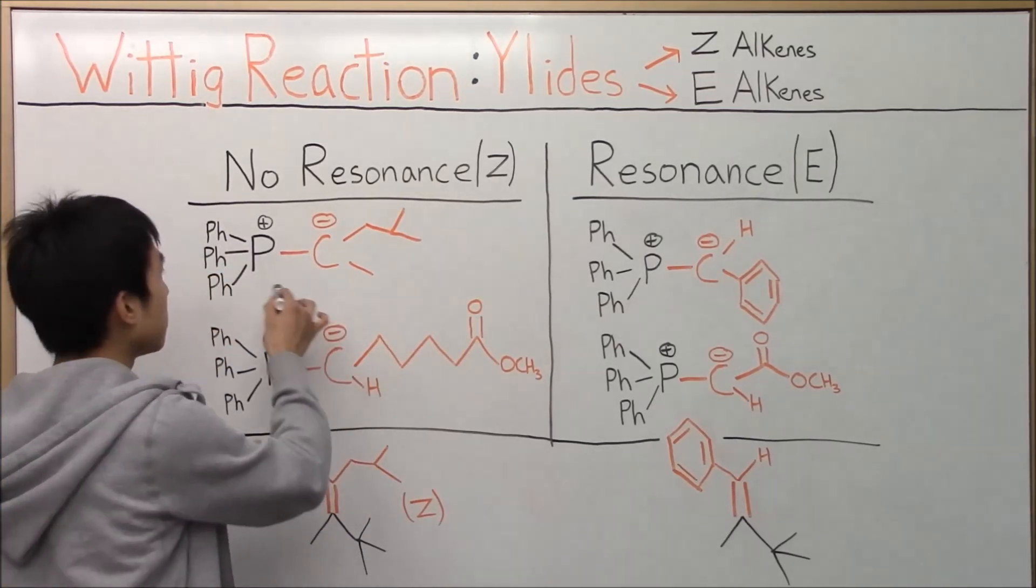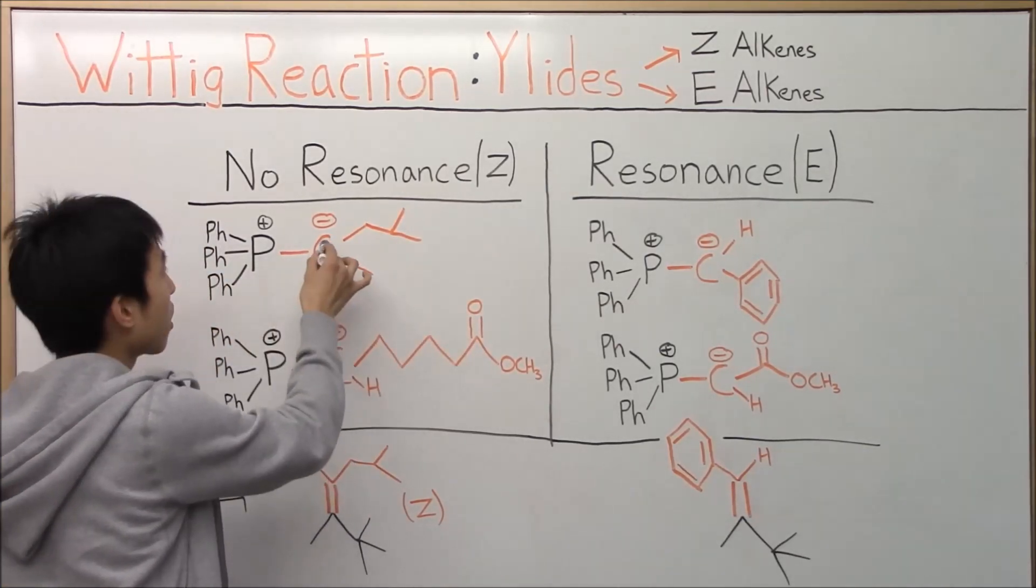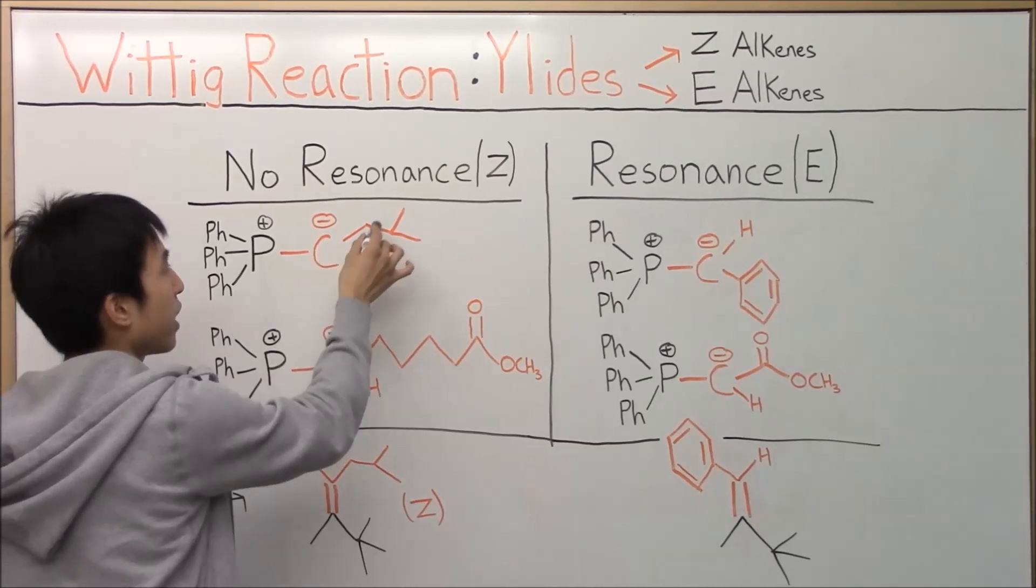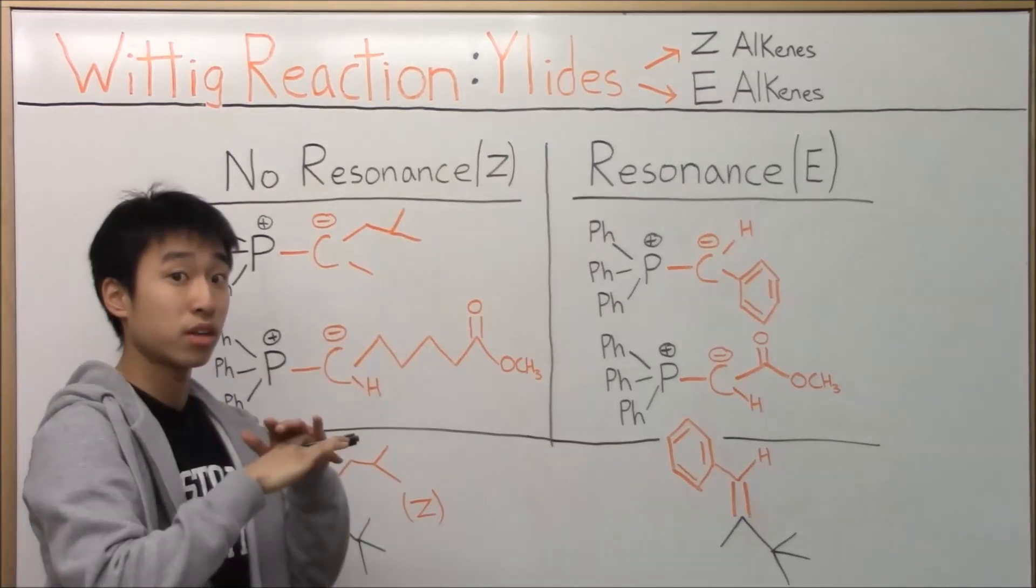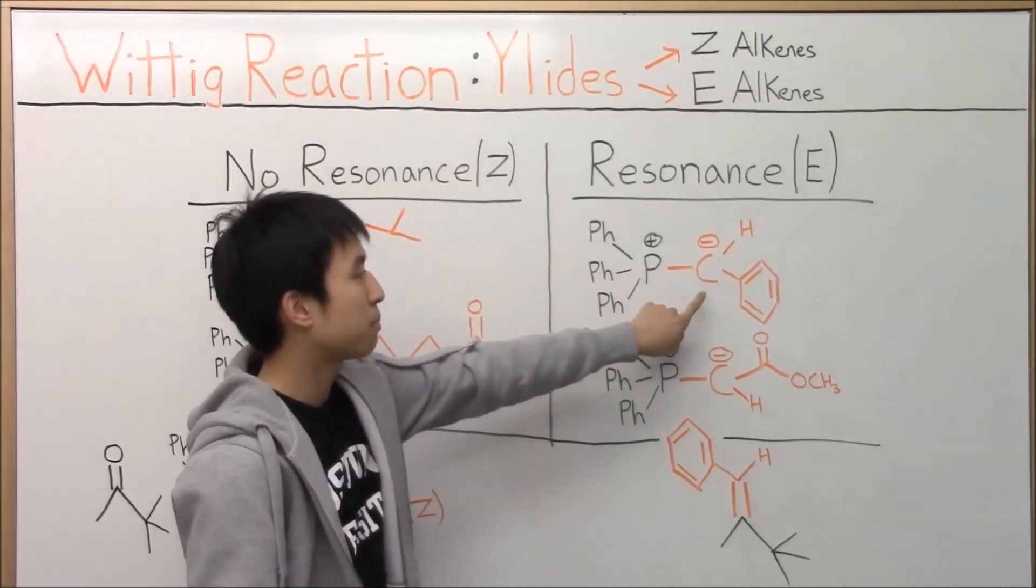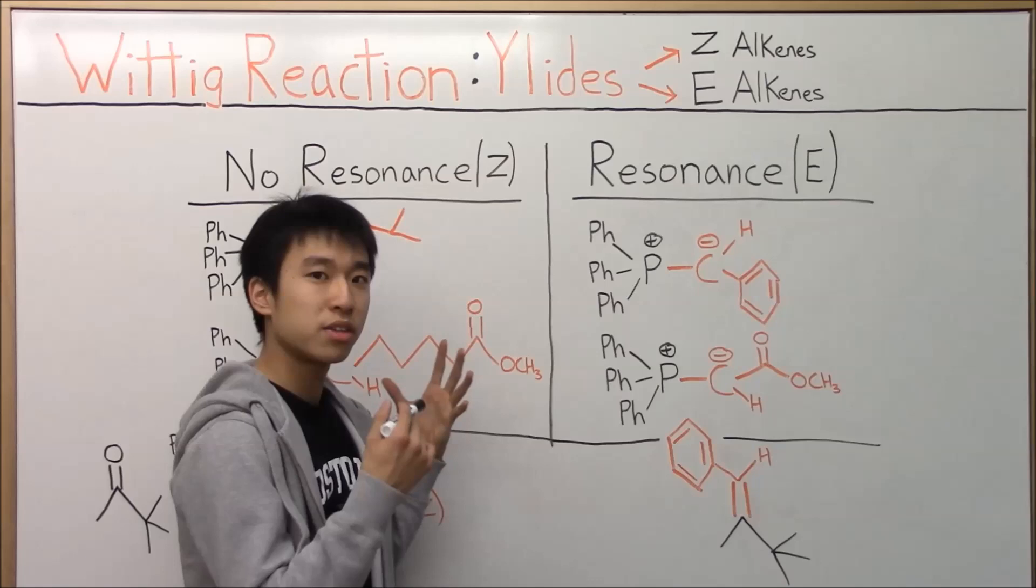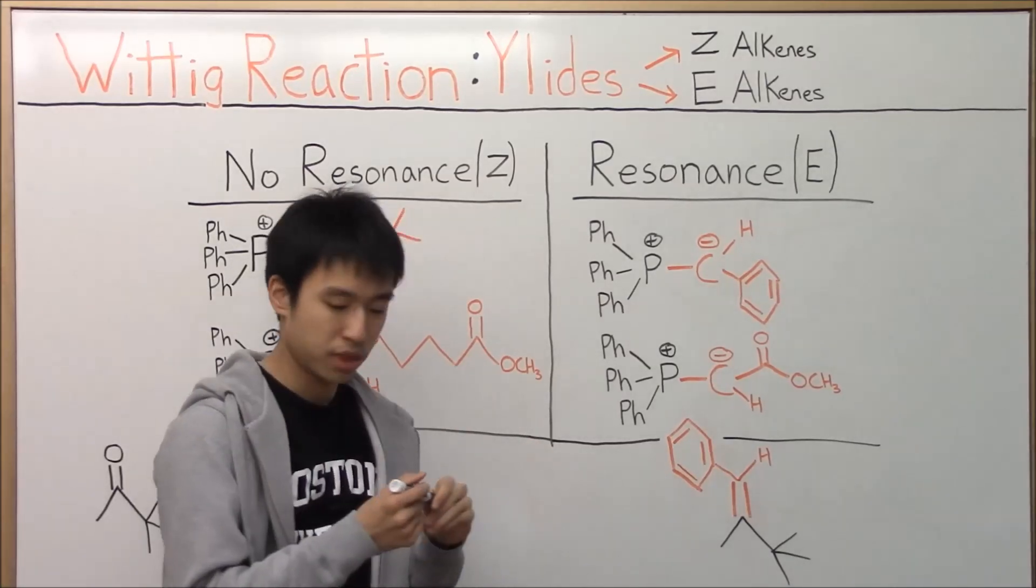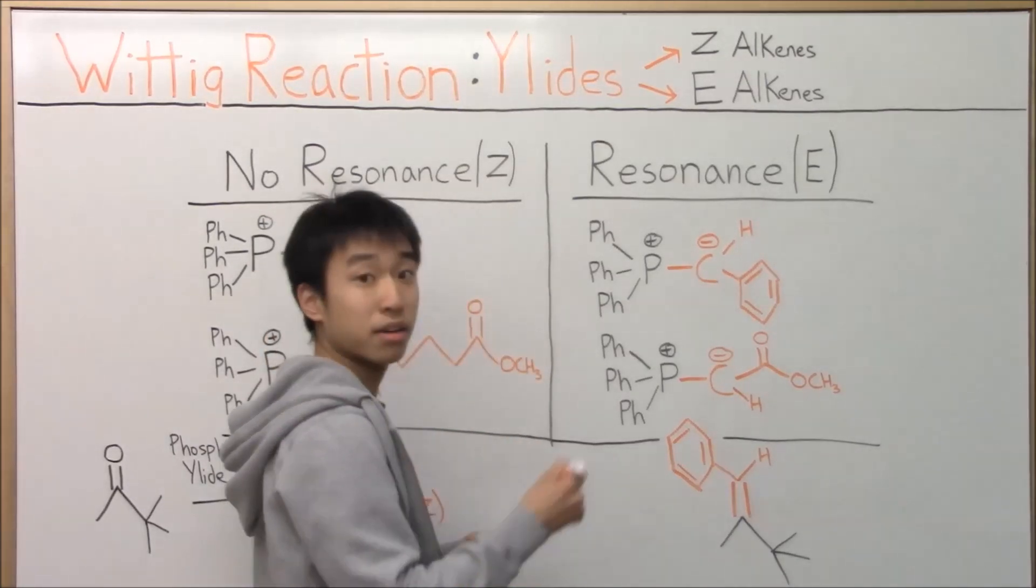So in that video I had used this ylid over here where the carbon of the ylid has just two carbon chains here that provide no resonance to help stabilize it, but the other example had a benzene ring, right? So there's actually a resonance that can occur with the benzene ring. I'll show you guys that right now.